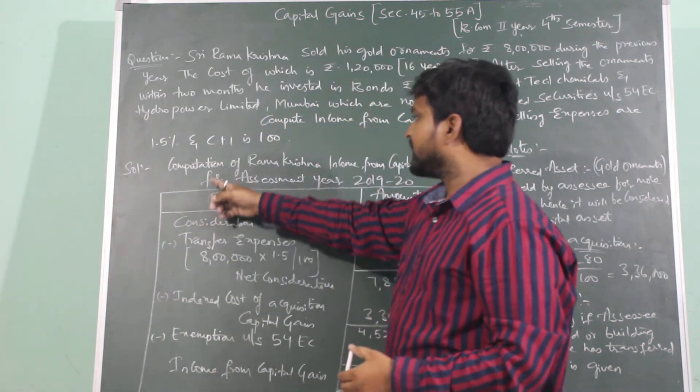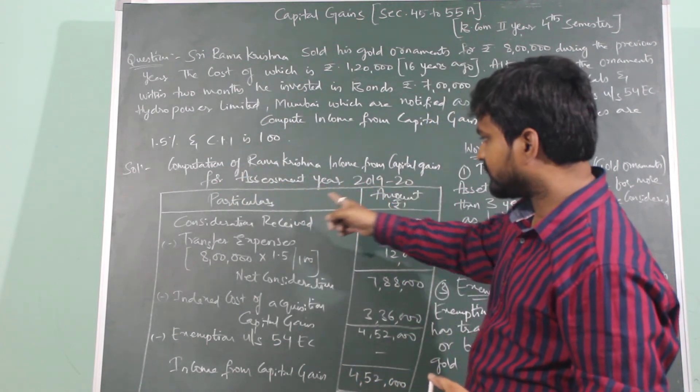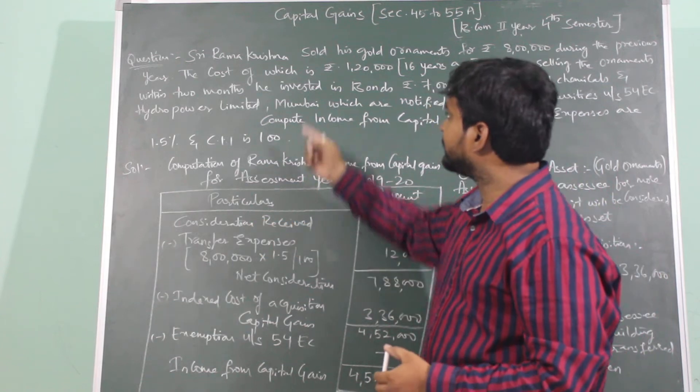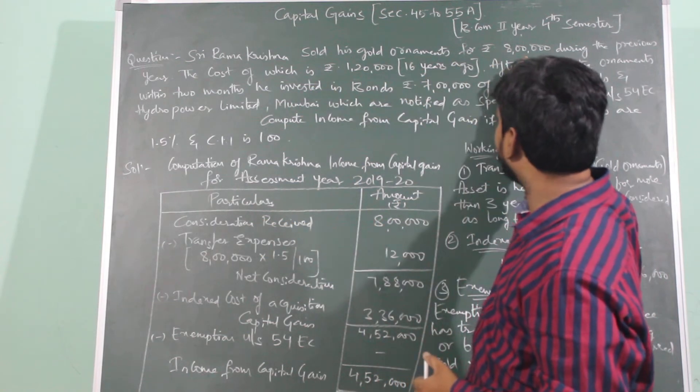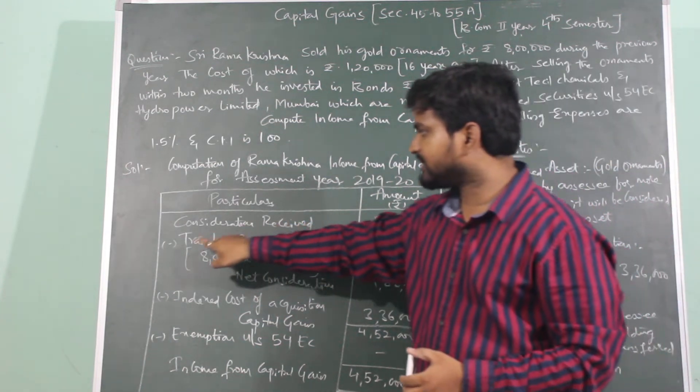Next, computation of Ramakrishna income from capital gain for assessment year 2019-2020. Particulars amount. Consideration received. How much did Ramakrishna get for the ornaments? 8 lakhs. Consideration received will be 8 lakhs.